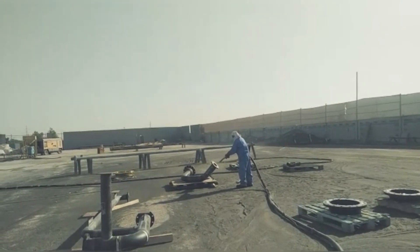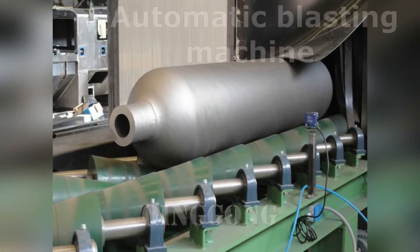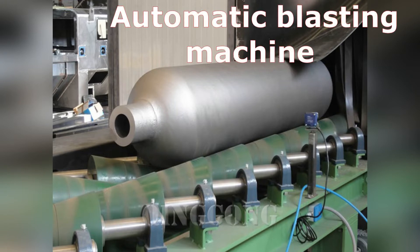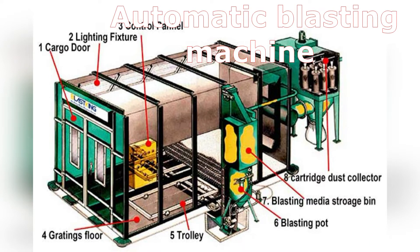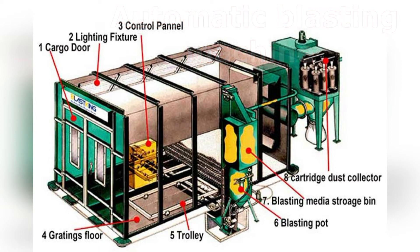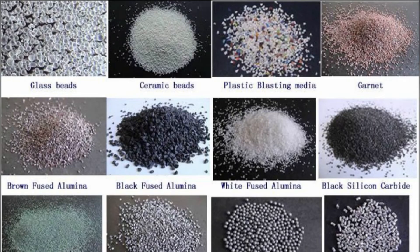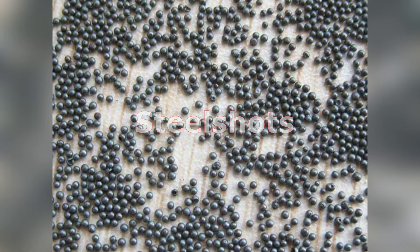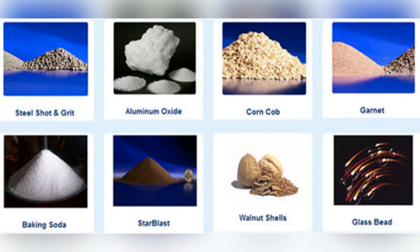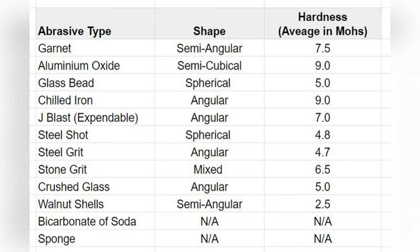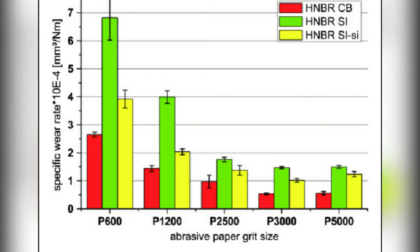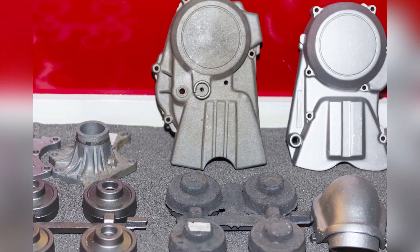Abrasive blast cleaning can also be performed with centrifugal impellers that use revolving radial-bladed wheels to throw abrasive material at the surface to be prepared. The force of impact varies according to the size of the wheels and their velocity. A wide range of abrasives are available, including both non-metallic and metallic varieties like aluminum oxide or metallic grits such as chilled iron, as well as plastic, ceramic, and natural materials appropriate for the substrate material and application requirements.